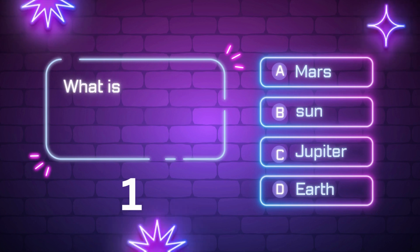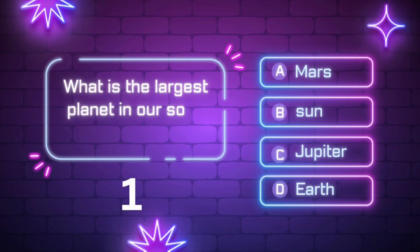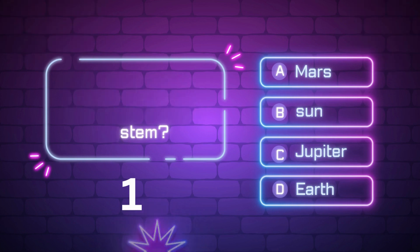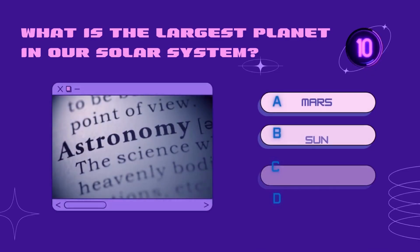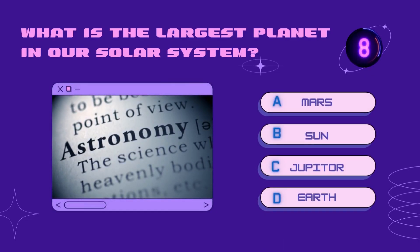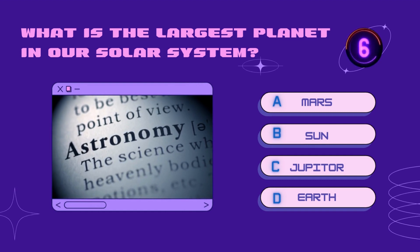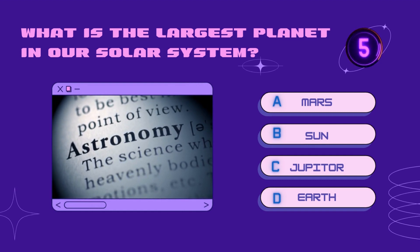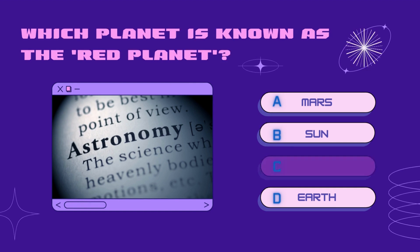What is the largest planet in our solar system? Mars, Jupiter, Sun, Earth? Your time starts now. Right answer is Jupiter.